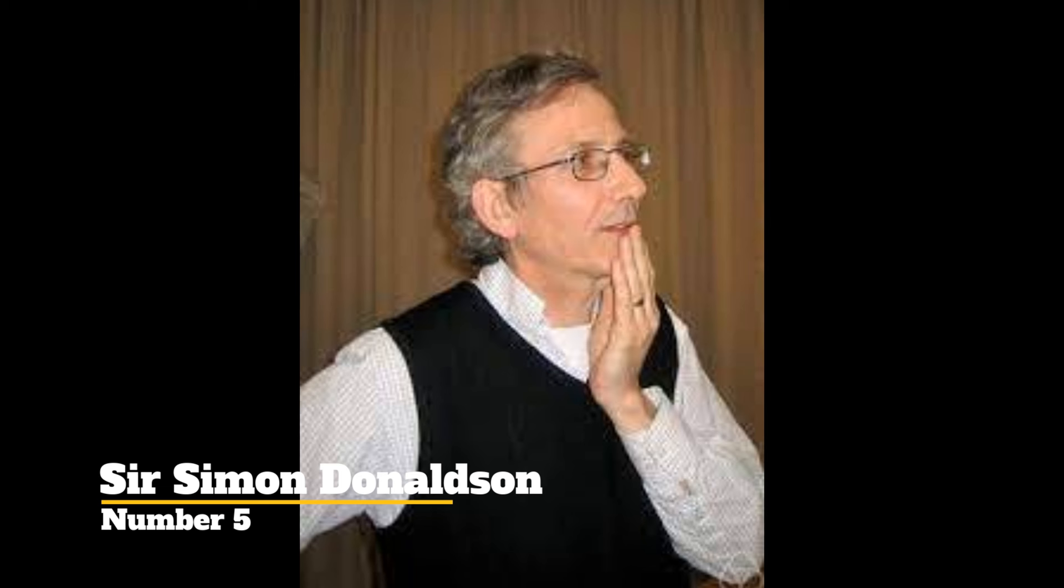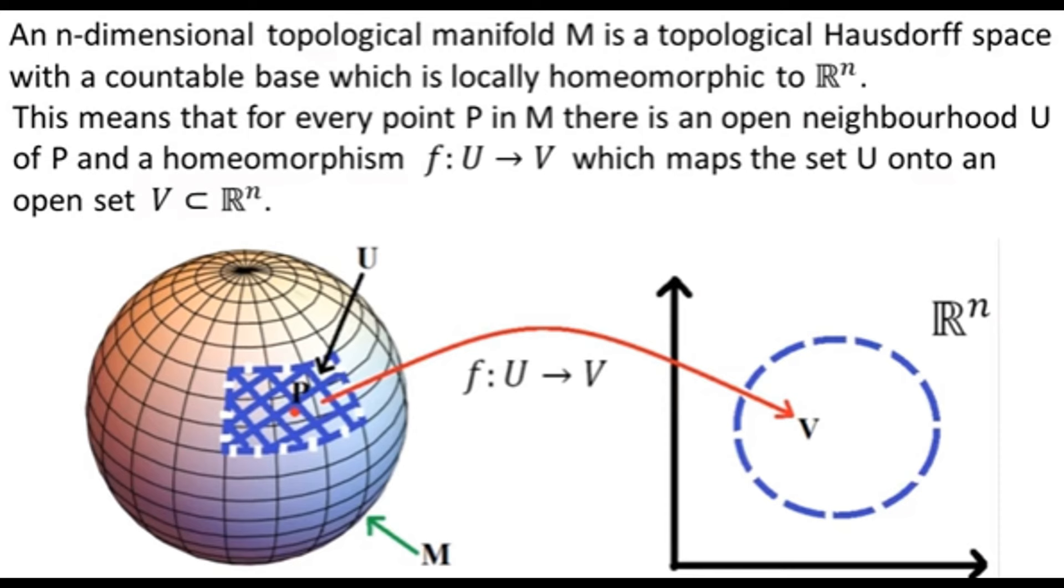Number 5. Sir Simon Donaldson. Sir Simon Donaldson, a prominent English mathematician, has revolutionized geometry and topology with groundbreaking contributions. His pioneering work on the topology of four-dimensional manifolds, particularly in the realm of gauge theory, earned him the prestigious Fields Medal in 1986. Donaldson's insights into the intersection of differential geometry and algebraic topology have led to profound advancements in understanding the fundamental structures of space. His proof of Donaldson's theorem on smooth four-manifolds with definite intersection forms stands as a landmark achievement in mathematics, illuminating previously unexplored corners of geometric theory.